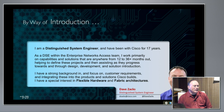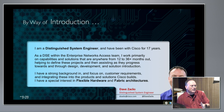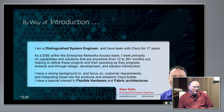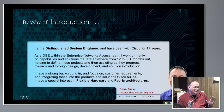My name is Dave Zacks. I'm a Distinguished Engineer on the Enterprise Networks Access Team. Basically, I tend to work on things that are anywhere from 12 to 36-plus months out, trying to figure out what we need to be building now to sell to you then. The main things in my headlights right now are two areas: flexible infrastructure and flexible ASICs, as well as fabric architectures and all the stuff we're doing with SDA, which was really cool to see coming out here at Cisco Live for the first time.